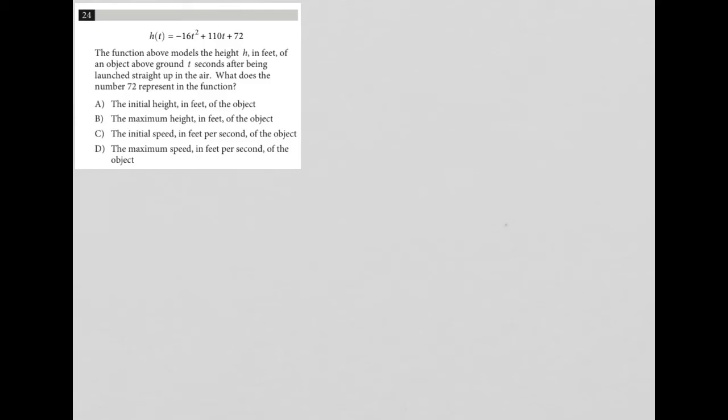This question starts by giving us a function: h(t) = -16t² + 110t + 72. The function models the height h in feet of an object above ground t seconds after being launched straight up in the air.